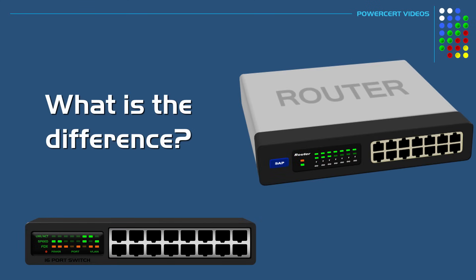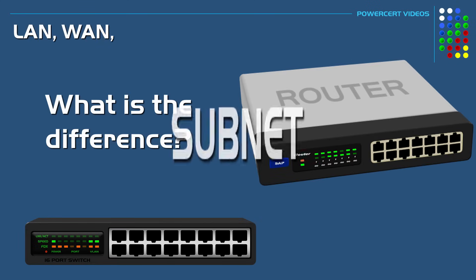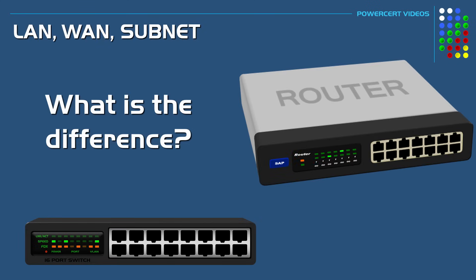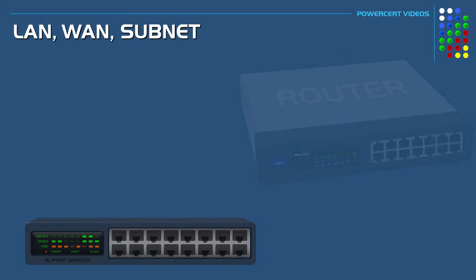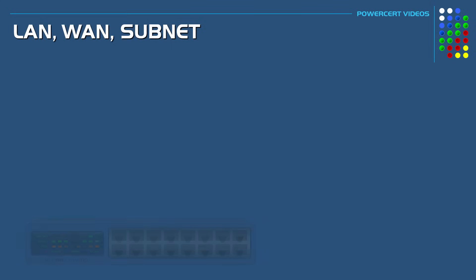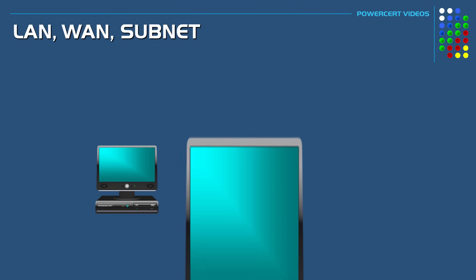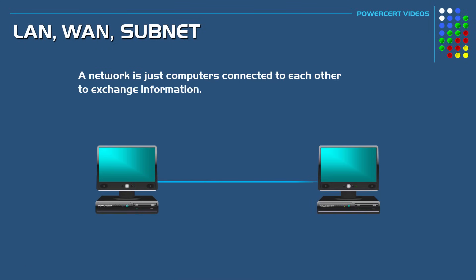What is the difference between a LAN, WAN, and a subnet? That is the topic of this video. Now the first thing we must do is define what a network is. Simply put, a network at its most basic are just computers connected to each other to exchange information.